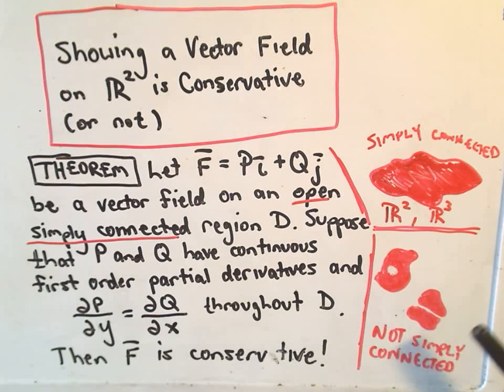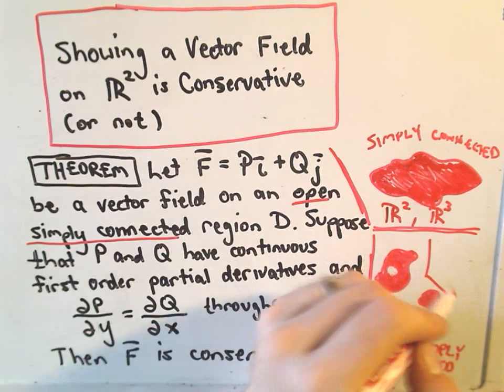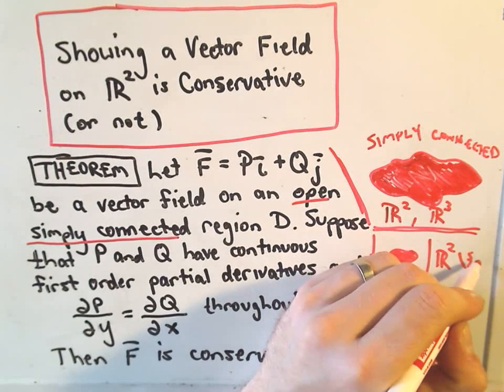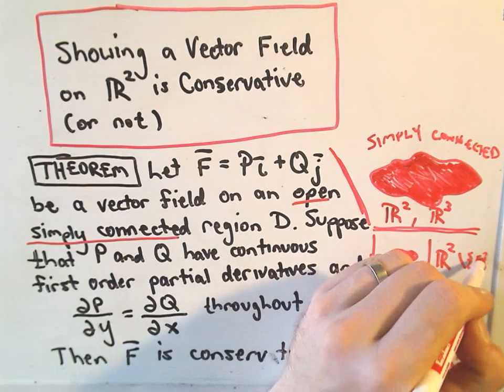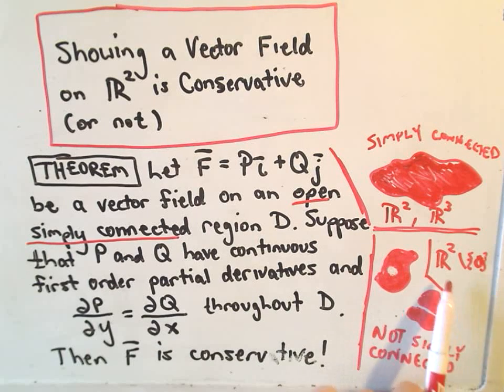An example of something that's not simply connected would be these little regions down here that have little holes in them. So another example, for example, if we took R² and we took away just the origin (0,0), then you would have a hole in the plane, and that would not be a simply connected region.